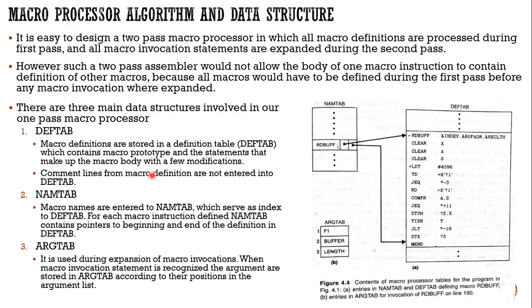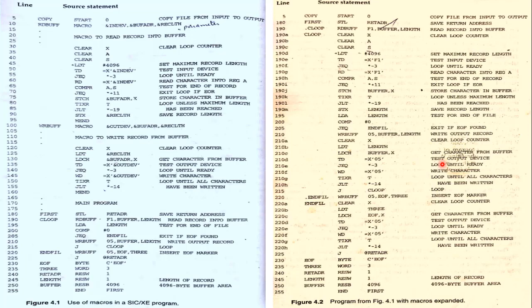DEFTAB is the macro definition table. Macro definitions are stored in DEFTAB, which contains the macro prototype and the statements that make up the macro body with a few modifications. Comment lines from macro definitions are not added to DEFTAB. Before looking into this table we will look at an example.